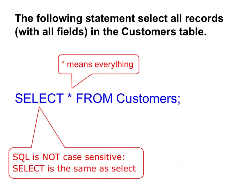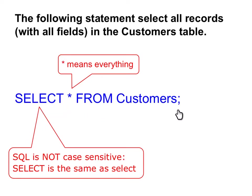Now we can look at a very simple example of an SQL statement: SELECT * FROM Customers. This statement selects all the records with all fields. The asterisk means everything — every record and every field or column. Customers is the name of the database table. Note that SQL is not case sensitive, meaning SELECT is the same as select.